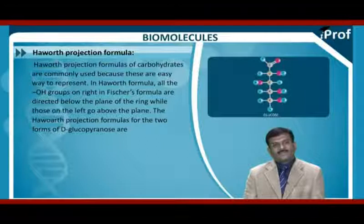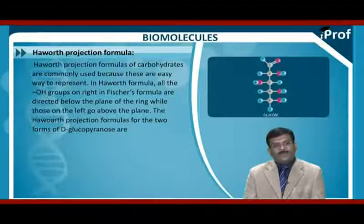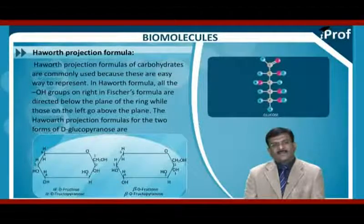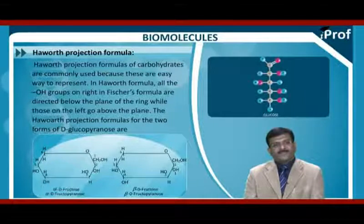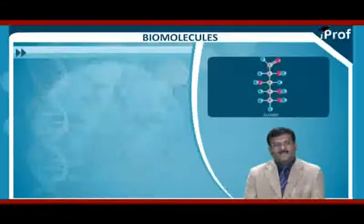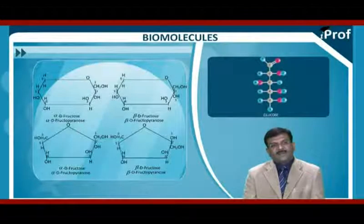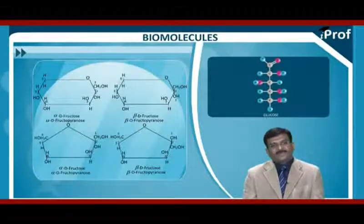The Haworth projection formula for the two forms of D-glucopyranose are like this — alpha D-glucose (alpha D-glucopyranose) and beta D-glucose (beta D-glucopyranose). This is alpha D-fructopyranose and this is beta D-fructopyranose.